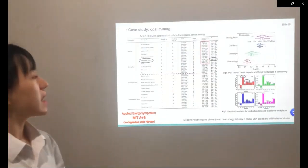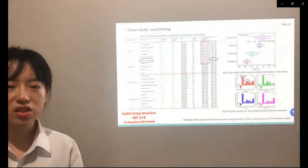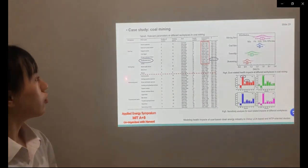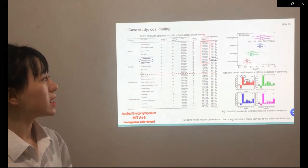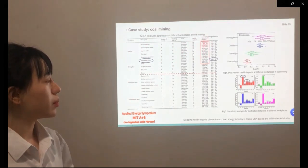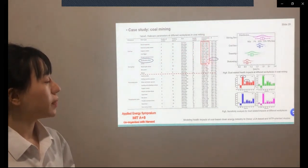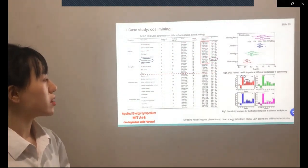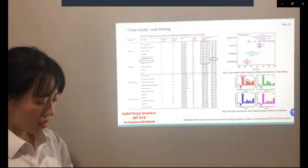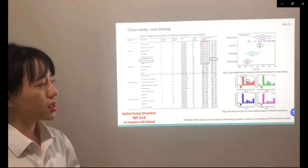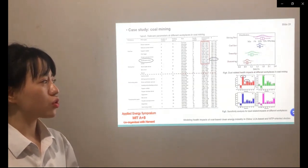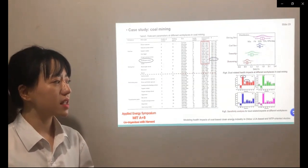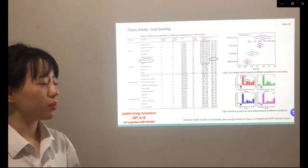The first case study is coal mining. It was conducted in a coal mine in Shanxi province, China. As shown in this picture, four workplaces and 21 work types were divided. After application of models, we found that the dust concentration in coal mining is in the range of 3.35 to 17.85 mg per cubic meter. We found that underground coal drivers suffered from the greatest health risk, and the disability adjusted life years was calculated as well. The sensitivity analysis shows that working duration is the most significant parameter in coal mine.